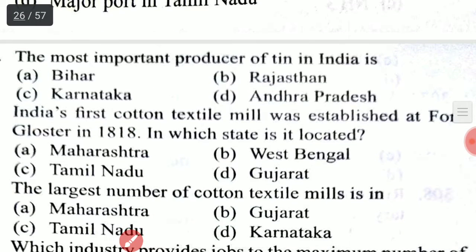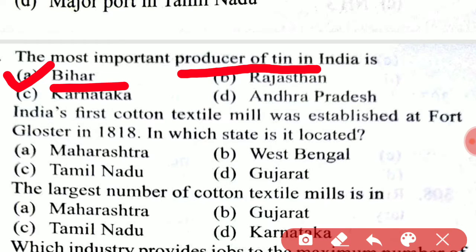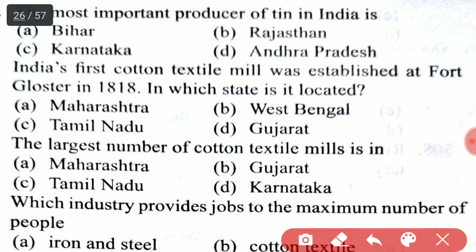The most important producer of tin in India is option A, Bihar. Next, India's first cotton textile mill was established at Fort Gloucester in 1818. In which state is it located? It is located in West Bengal.